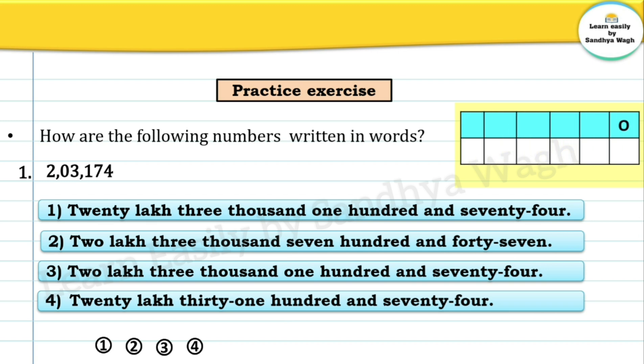The place value chart has the following places: units, tens, hundreds, thousands, ten thousands, and lakhs. Now let's write this number in the place value chart.